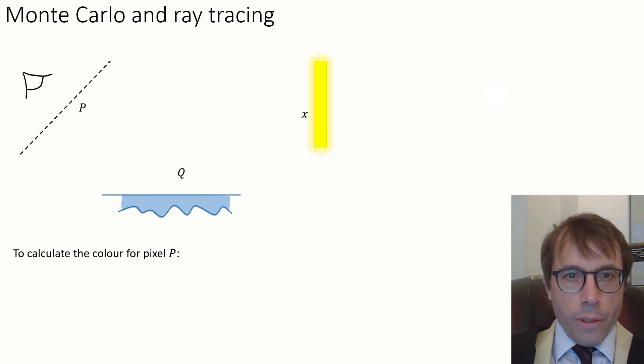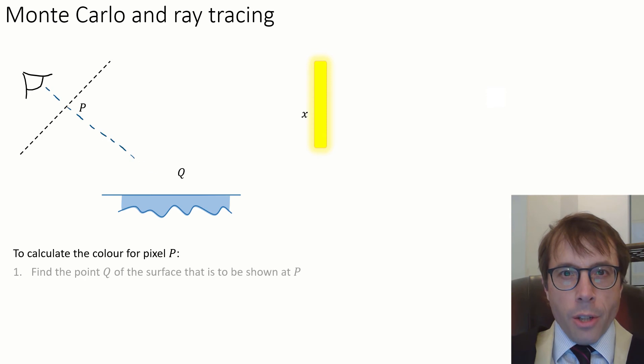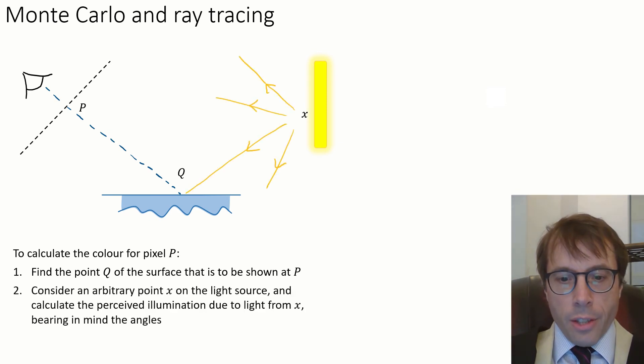First we figure out which 3D object the user is seeing through pixel p. Let's say that the user sees some point q on some object in the 3D world. Next we look at the light sources that are illuminating q. From every point on every light source I can imagine a ray of light that might hit q.